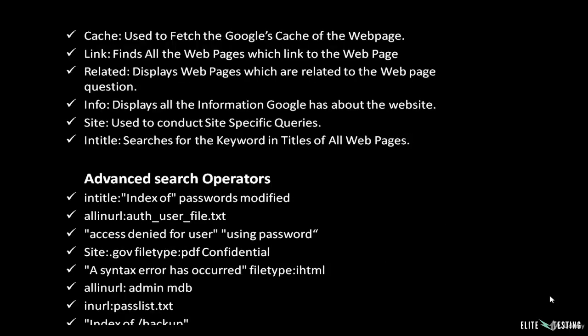The cache operator is used to fetch the Google cache of a web page. The link operator finds all the web pages which link to a given web page. Related displays web pages which are related to the web page in question. Info displays all the information Google has about a website.